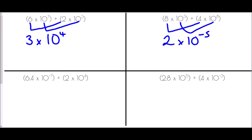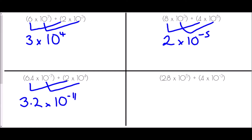For the third division example: 6.4 divided by 2 is 3.2. Then 10 to the power of negative 7 divided by 10 to the power of 4 — that is negative 7 take away 4, which gives 10 to the power of negative 11. So the answer is 3.2 times 10 to the negative 11.